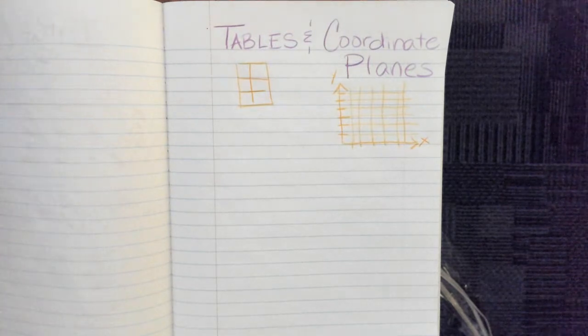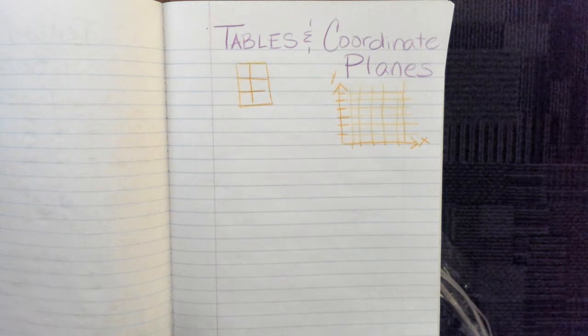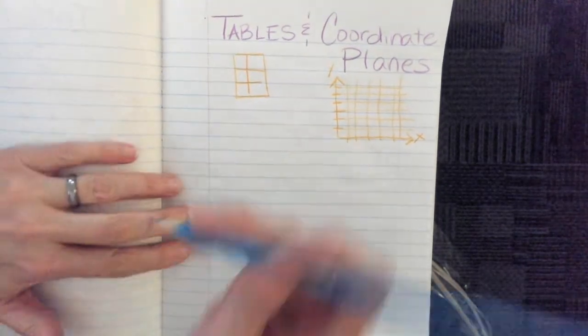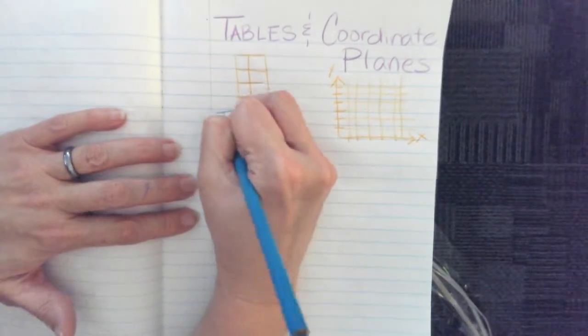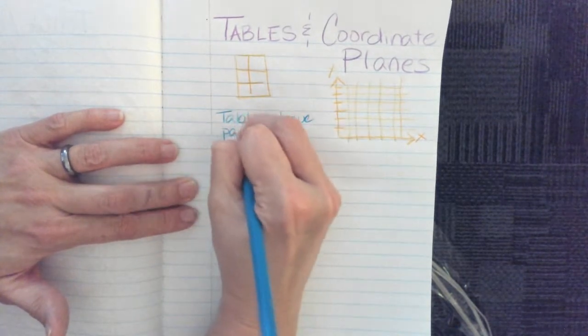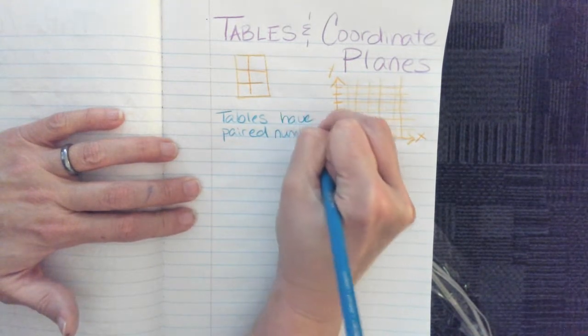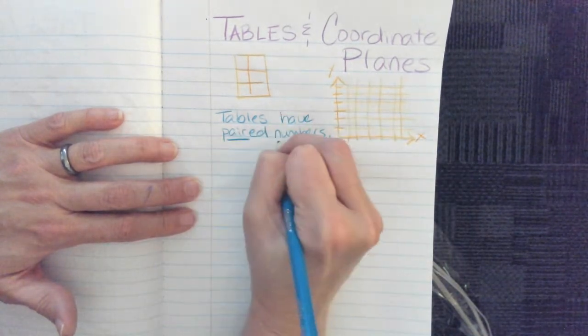And so now you could reasonably ask yourself, how do these go together? So here's the thing, tables have paired numbers.